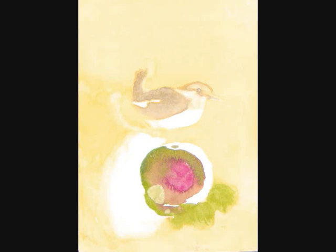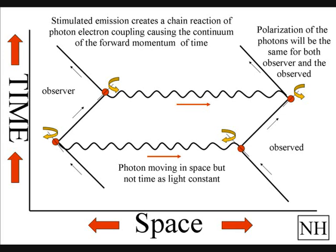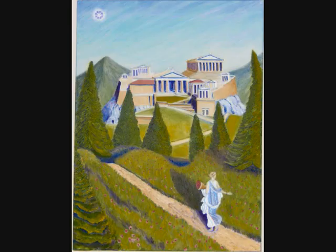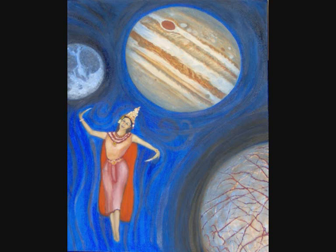When this wave particle function comes in contact with the electrons of another object, the process will repeat itself again. This is a continuous process within our universe, called stimulated emissions. In quantum atom theory, this process creates a time continuum, or arrow of time.